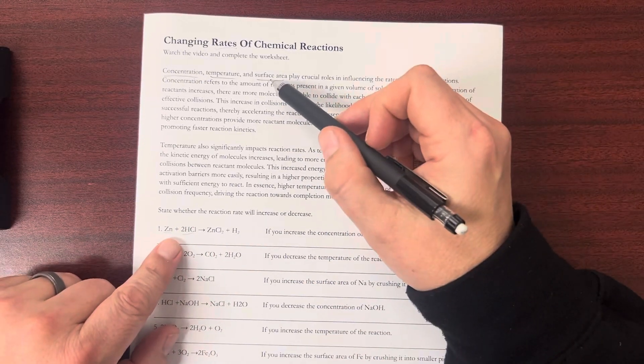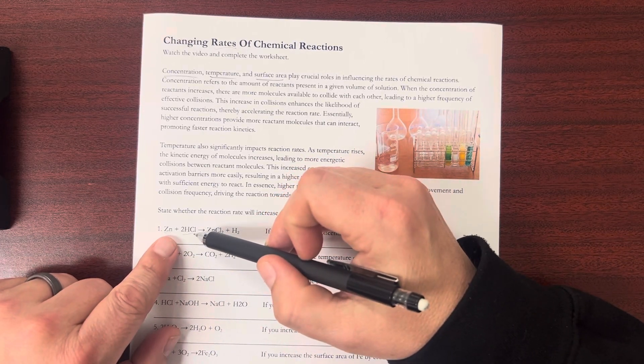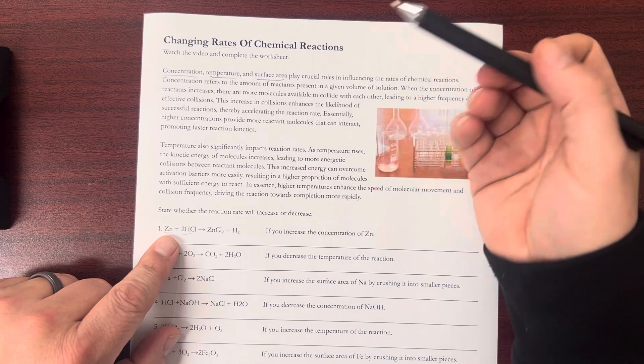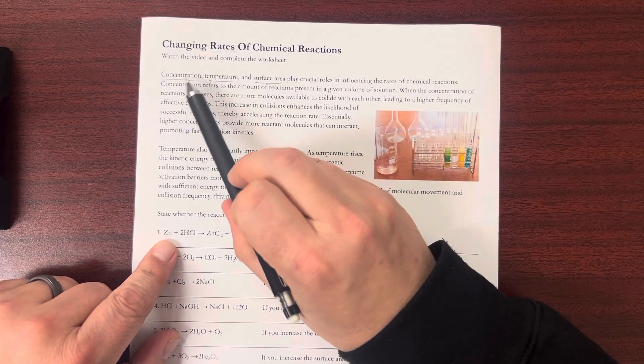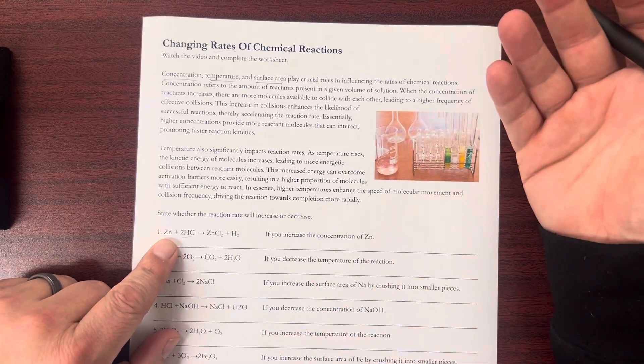And if I increase the surface area of one of these molecules, one of the reactants, then the rate will also increase. So increasing any of these things will increase the rate or the speed of the reaction.